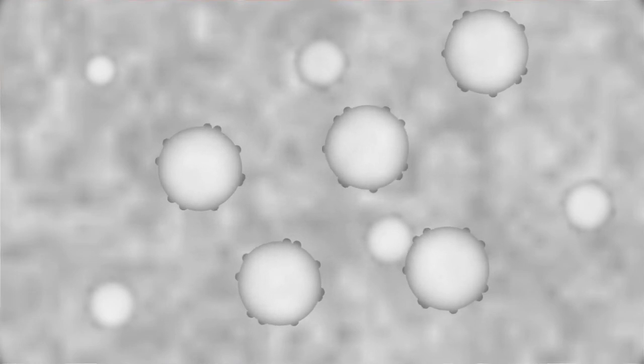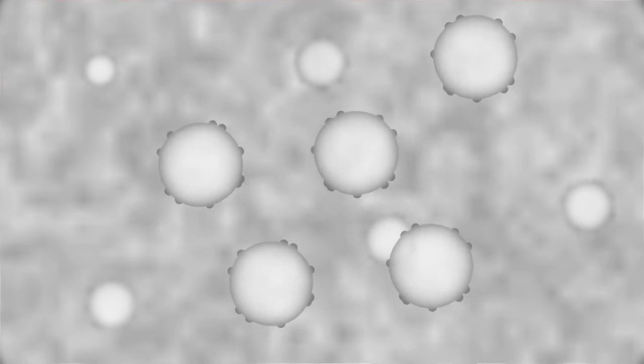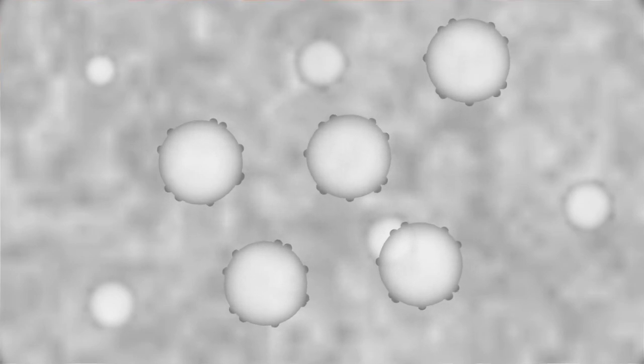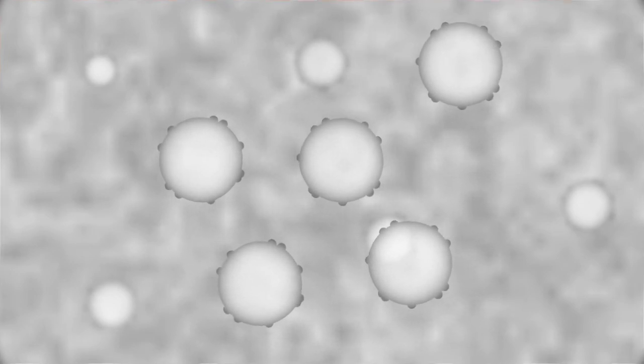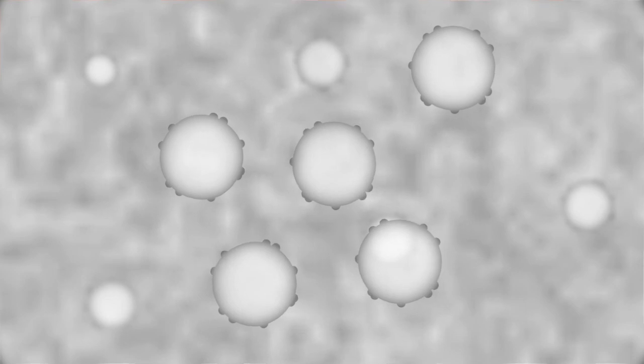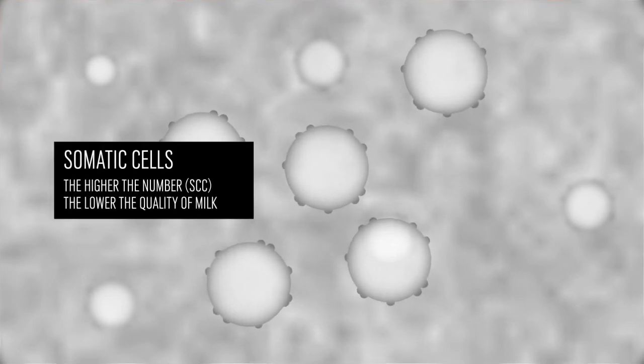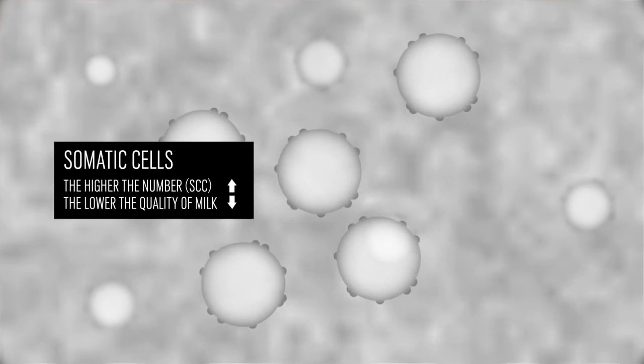The somatic cell count is the main indicator of milk quality. If the cow is fighting a mastitis infection, the number of somatic cells present will be higher. As the number increases, the quality of the milk decreases.